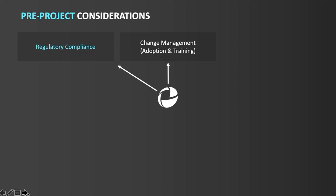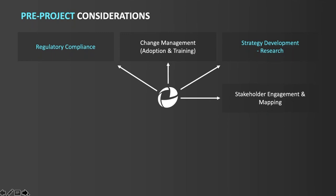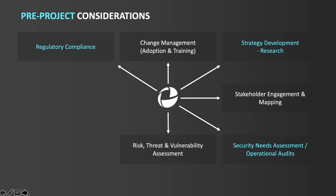Strategy development: creating a security strategy is really important, and one many organizations don't do enough of. Look at other organizations who have deployed such a system, engage with them, and understand what went right and what didn't. We need to look at stakeholder engagement and mapping, operational and technical audits to scope requirements and processes, changes in policy and procedure, risk, threat and vulnerability assessments, security needs assessments, and due diligence reporting.